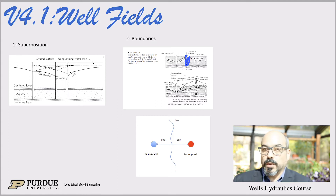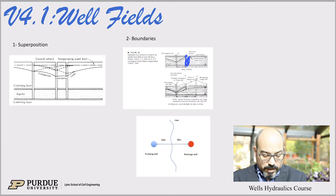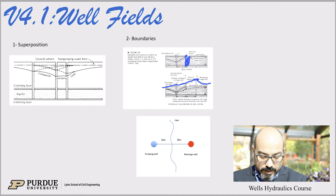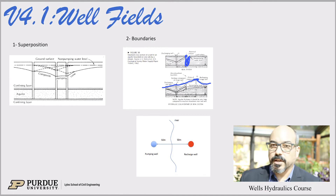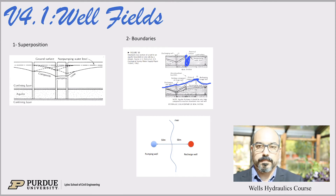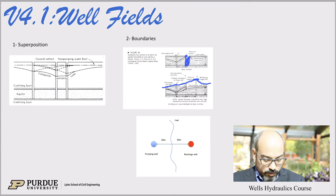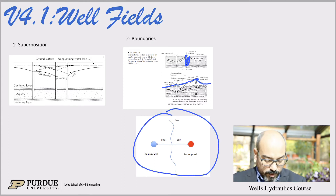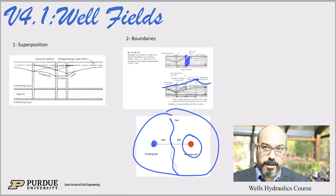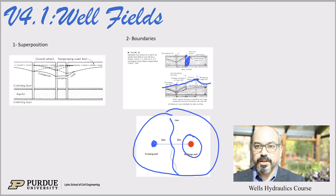How do we deal with those types of boundaries? The answer is basically an image solution, where you place a recharge well as an imaginary image well. Here's an example where you have a river with a pumping well on the left-hand side, and you add a recharge well as an imaginary image to account for that boundary.